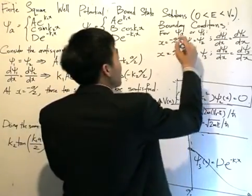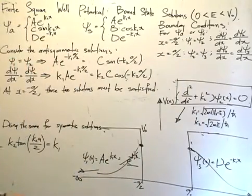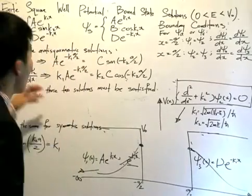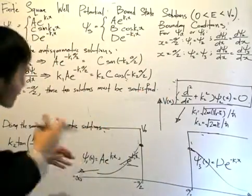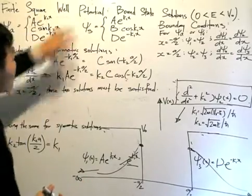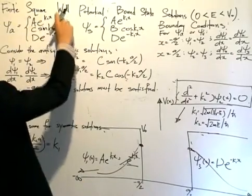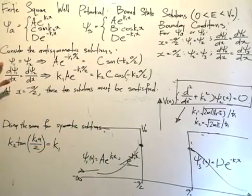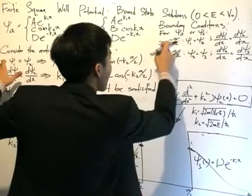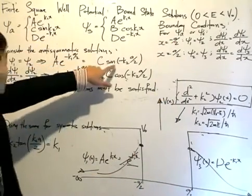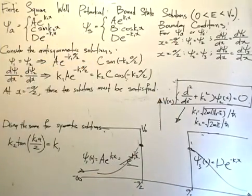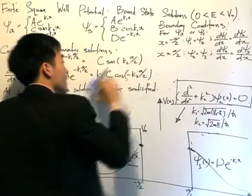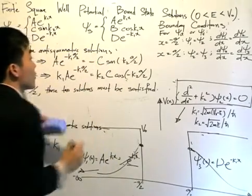First, let me consider the anti-symmetric solution psi_a. I will apply the boundary conditions at x equals minus a/2 by substituting that value into the solutions — psi_1, psi_2, and psi_3. For psi_1 equals psi_2, substituting x equals minus a/2, I notice the argument of the sine function becomes minus k2 times a/2. Since sine is an odd function, I can bring the minus sign outside the sine function.